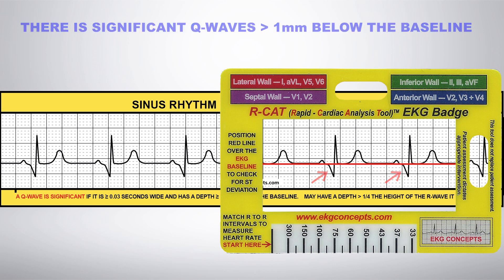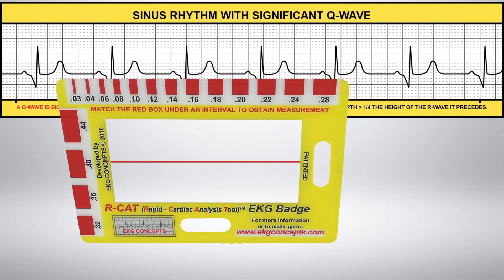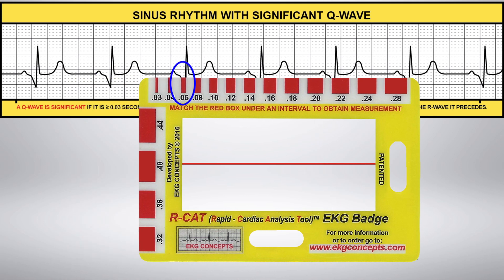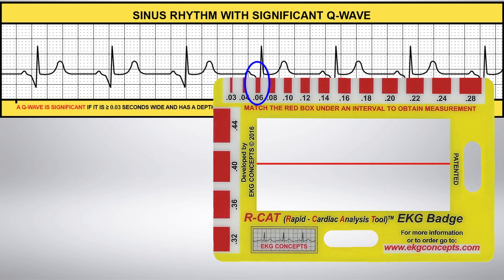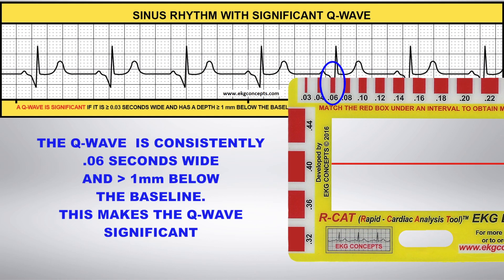Now flip the badge over and use the calibrated red boxes to measure the width of the Q wave. Here you see the Q wave is consistently .06 seconds wide, which is greater than the norm of .03 seconds wide.